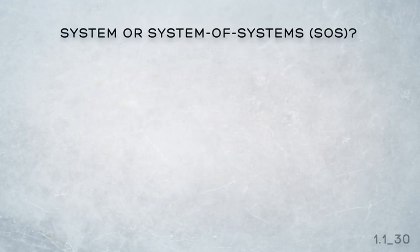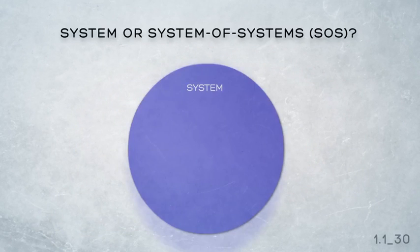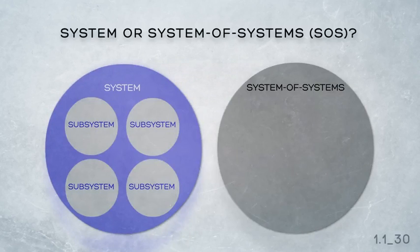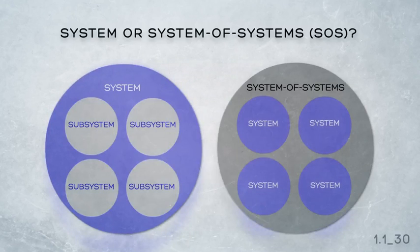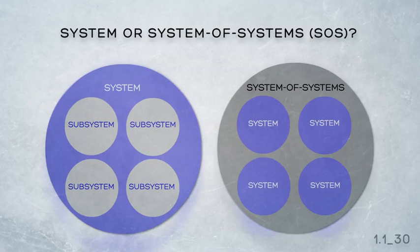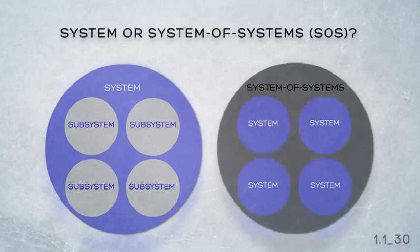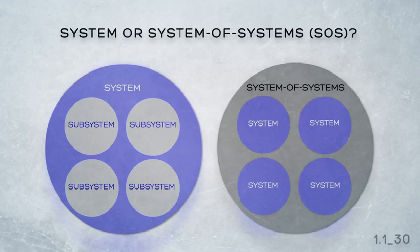A system of systems has a similar architecture to that of a system — both comprise elements that are interconnected. But there is a difference: the system of systems elements are systems in their own right, so they are managerially independent and operationally independent, and have probably been optimised for their own purposes before contributing to the mission of the system of systems. On the other hand, the subsystems in a system are not independent and only exist to serve the parent system. Subsystems are therefore invariably not optimal from their own perspective — they could be better — but it's the system that needs to be optimised, not the subsystems.